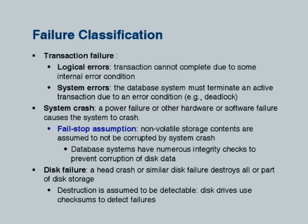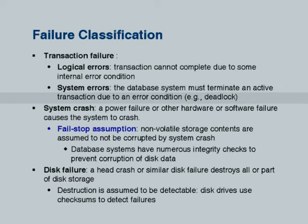At the software level, a transaction might fail because of some internal error condition — for example, an integrity constraint is violated. That is an error you have to roll back the transaction. It could be due to a system error, for example there is a deadlock. The transaction has to roll back; that is a failure, and to deal with it you need to be able to undo something.